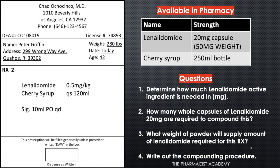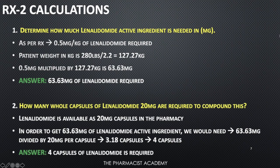Question one: determine how much lenalidomide active ingredient is needed in milligrams. As per the prescription, 0.5 milligrams per kilogram is required. The patient weighs 280 pounds, which converts to 127.27 kilograms. So 0.5 mg × 127.27 kg = 63.63 milligrams of lenalidomide needed.